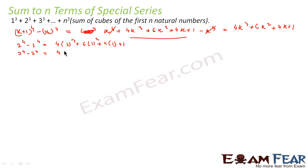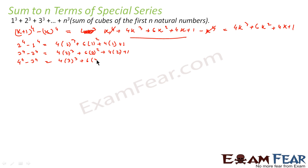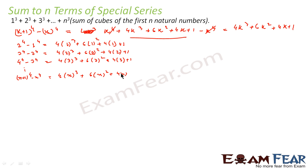For k=2: 3⁴ minus 2⁴ equals 4 into 2 cube plus 6 into 2 square plus 4 into 2 plus 1. For k=3: 4 to the power 4 minus 3 to the power 4 equals 4 into 3 cube plus 6 into 3 square plus 4 into 3 plus 1. Finally for k=n: n plus 1 to the power 4 minus n to the power 4 equals 4 into n cube plus 6 into n square plus 4n plus 1.